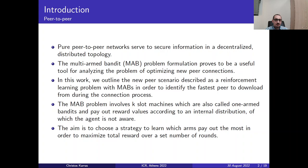The MAB Problem generally involves casino slot machines which are also named One-Arm Bandits and they basically pay out reward values according to an internal distribution of which the agent is not aware. The aim is to choose a strategy to learn which arm pays out the most in order to maximize the total reward over a set number of rounds. In this scenario we want to maximize the speed.